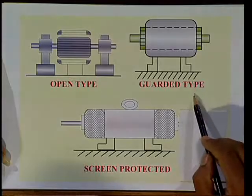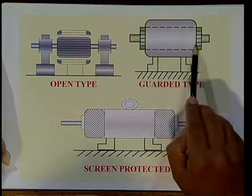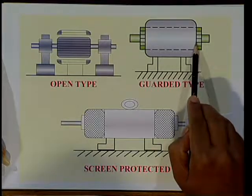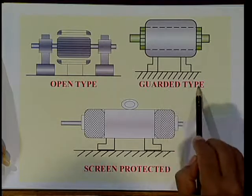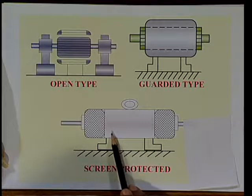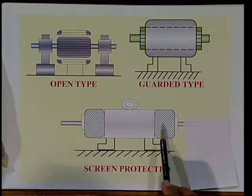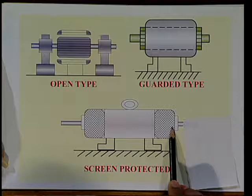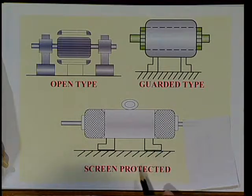In the guarded or protected type enclosure, some portion is protected, but there are large openings at both ends of the stator and rotor, which are exposed to free contact. In the screen protected type, the motor openings are exposed to the atmosphere, but the openings are fitted with screen covers which protect against accidental contacts and avoid entry of rats. However, this screen cannot prevent the falling of dust and water particles.